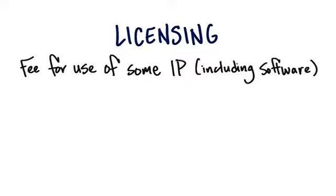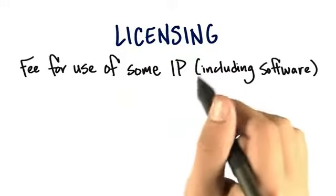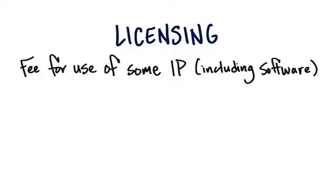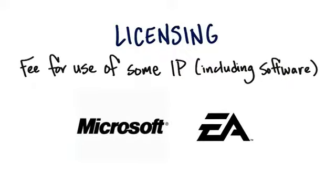Another type of revenue model is licensing — a fee for use of intellectual property, or IP. If you've ever used any software from any computer manufacturer, if you've read the fine print from Microsoft, Electronic Arts, or even Apple — congratulations — you don't own your software. You're actually using it under a license. That means you can't duplicate it and give copies away. You've agreed that you're licensing it for use on one computer, and you do not have infinite rights to their intellectual property.